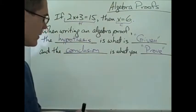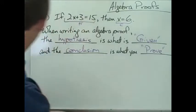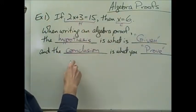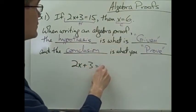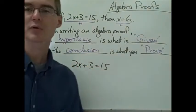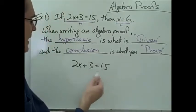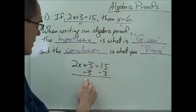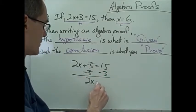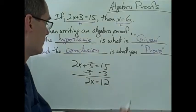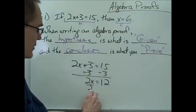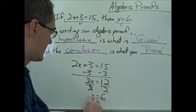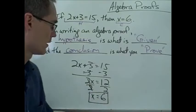Something I want to note about algebraic proofs — for this equation, 2x plus 3 equals 15, if we were just going to solve this in the normal way it wouldn't be that difficult. We'd subtract 3 from both sides, giving us 2x equals 12. Then we'd divide both sides by 2, giving us x equals 6, and we'd be done.